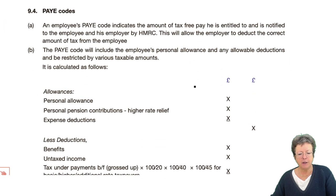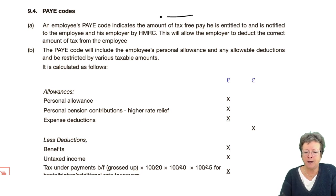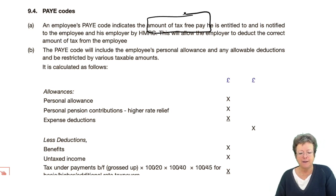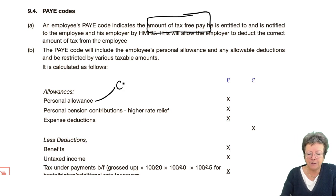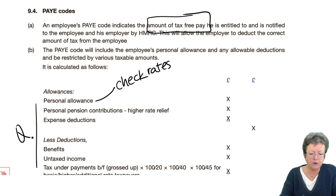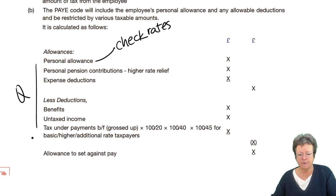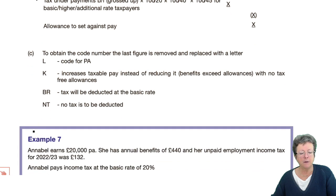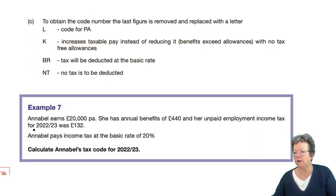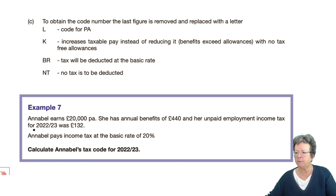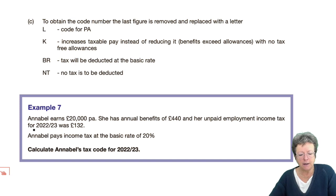Everybody gets a pay-as-you-earn code to indicate the amount of tax-free pay that they're entitled to. That's normally your personal allowance — check it in the rates. After the code number, there will be a letter — the last digit is removed and it will either be an L, a K, a B, R, or NT. Don't worry about those too much; just be aware of what they are.